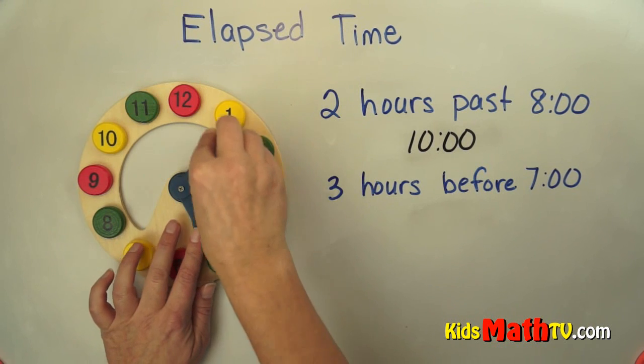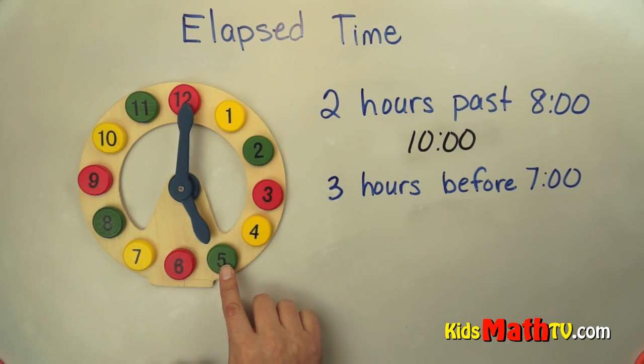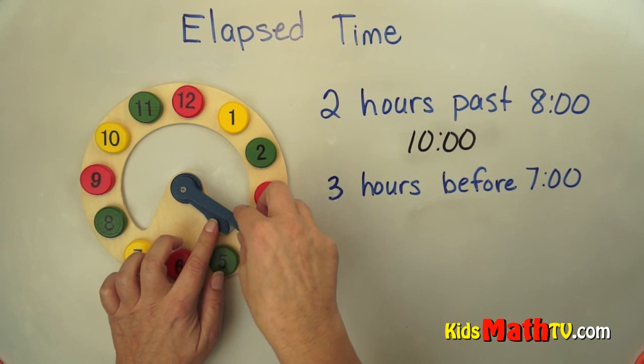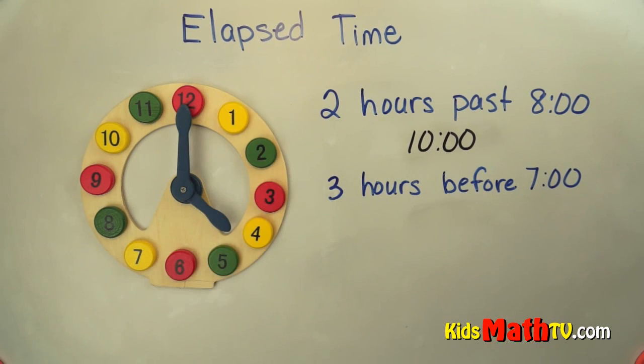Another hour before counterclockwise is five o'clock. And one more hour before is four o'clock. So three hours before seven is four o'clock.